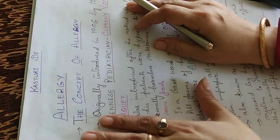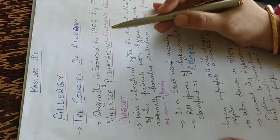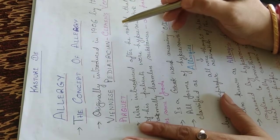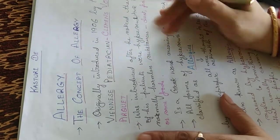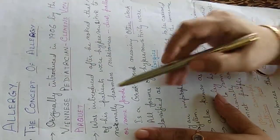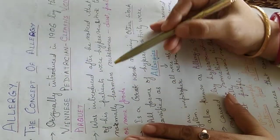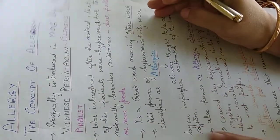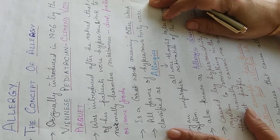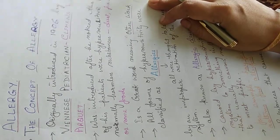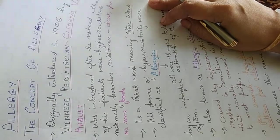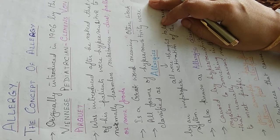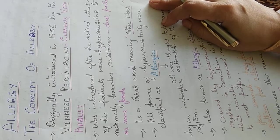This concept was introduced in 1906 by a Viennese pediatrician, his name was Clemens Vaughan Pirket. This concept was introduced after he noticed that some of his patients were hypersensitive to normally harmless substances. After that, he introduced this concept of allergy.